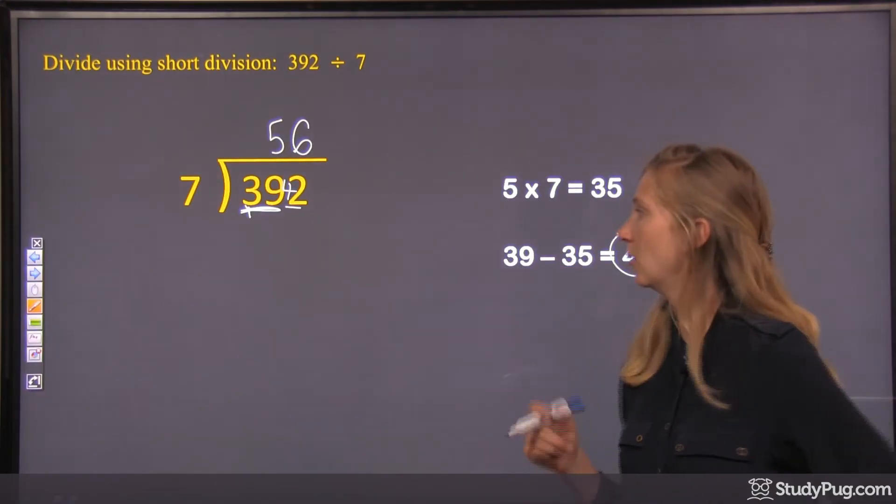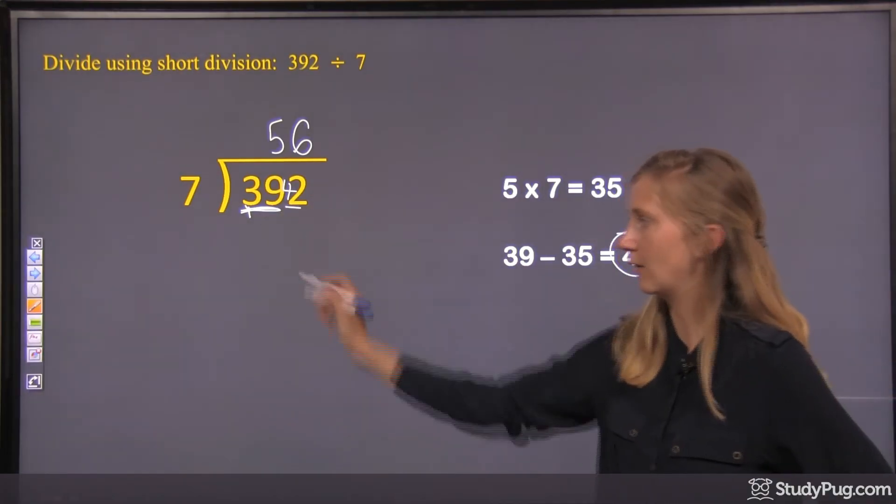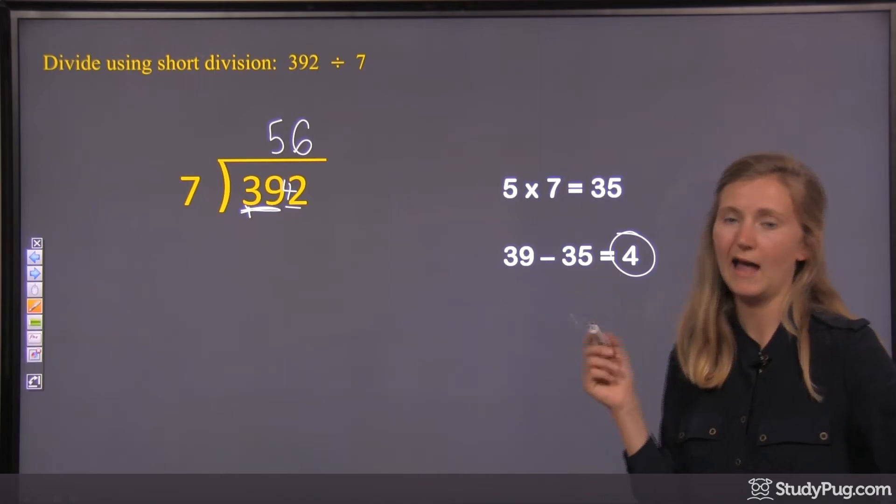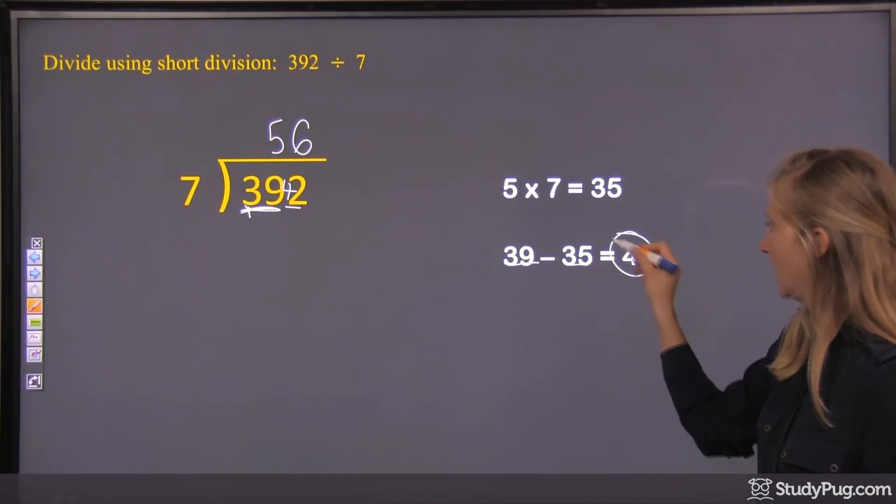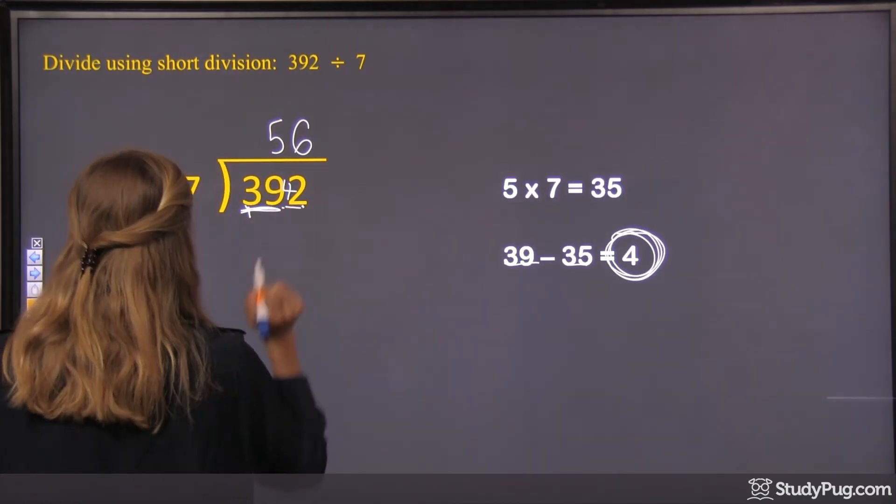Right? So short division makes it kind of cleaner. We don't have to write out as many steps, because a lot of the steps that we're doing, we can do in our head, or if you need to, you can write out, you could write out the subtraction if you really need to. And then you take that, what's ever left over, and put it in front of the next place value.